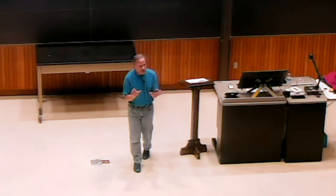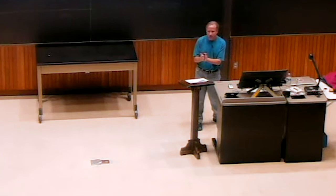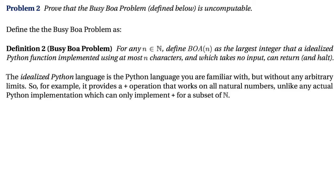In theory, you can always use either strategy for any problem. But oftentimes, if you don't have a similar problem to start with, doing the reduction is going to be harder than getting a contradiction. And for this one, if you try to solve it by doing a reduction, it's really tough.